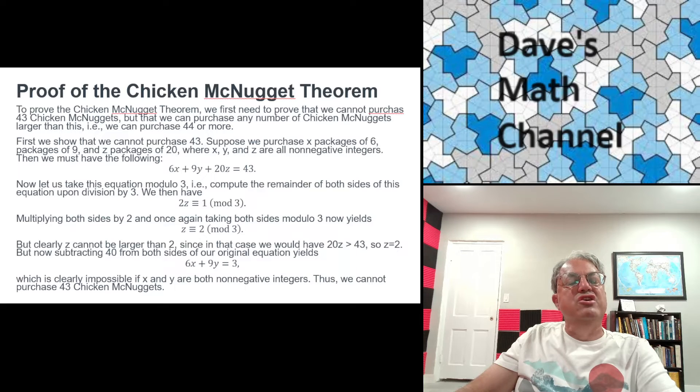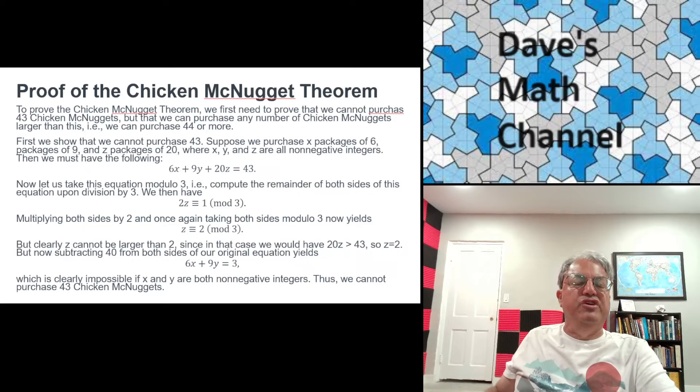you'll get 4Z is congruent to 2 mod 3. But 4Z is congruent to Z because 4 is congruent to 1 mod 3. So now you get Z is congruent to 2 mod 3. And what that means is that Z has to be 2 more than a multiple of 3.